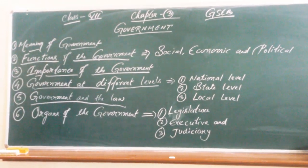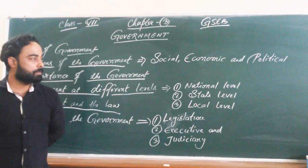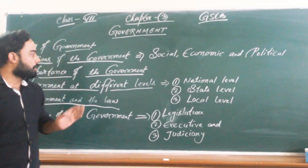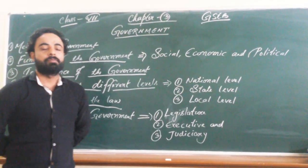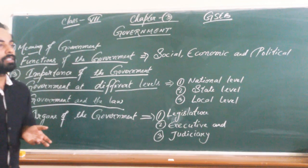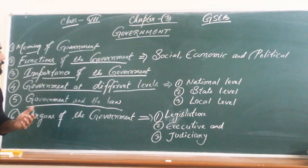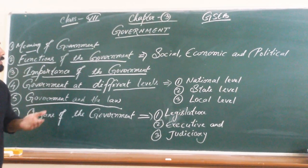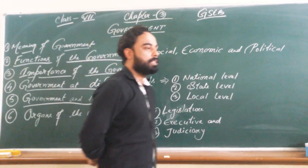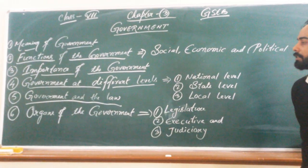Now, what is the importance of the government? The government makes laws, and it is the responsibility of the government to ensure that the law is equal for all people. One of the main functions and importance of the government is to make rules and regulations. Whenever there is a public gathering or social and religious functions, and especially during natural disasters, the government provides assistance to the people affected by natural calamities.